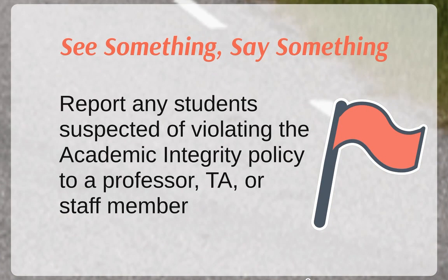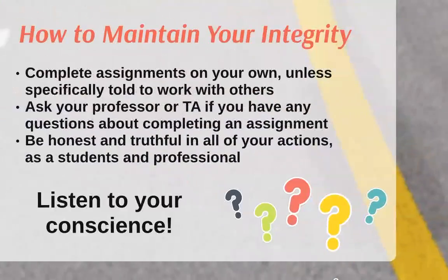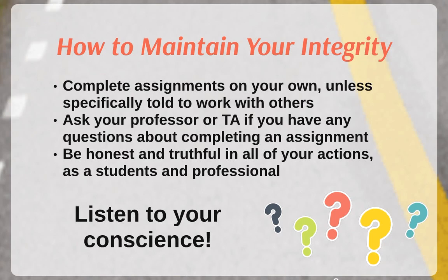Academic integrity violations may affect you also by seeing someone else violate the policies. So if you see something, you should say something. Report any student suspected of violating the academic integrity policy to a professor or TA in the class, or to another staff member if it's not a class you're taking. To maintain your own integrity: complete assignments on your own, assume you cannot collaborate unless specifically told otherwise, and if you have any questions about completing an assignment or using material from a previous course, talk to your professor or TA. Be honest and truthful in all your actions. If it doesn't feel right, it's probably not right, so don't do it.